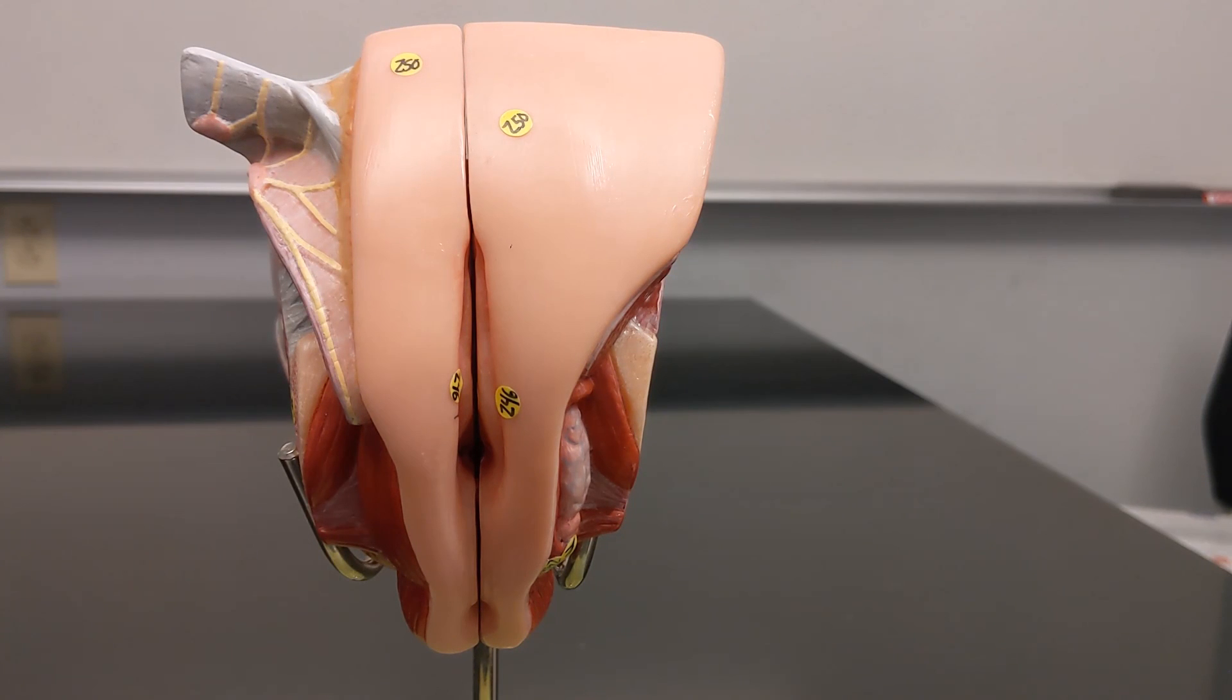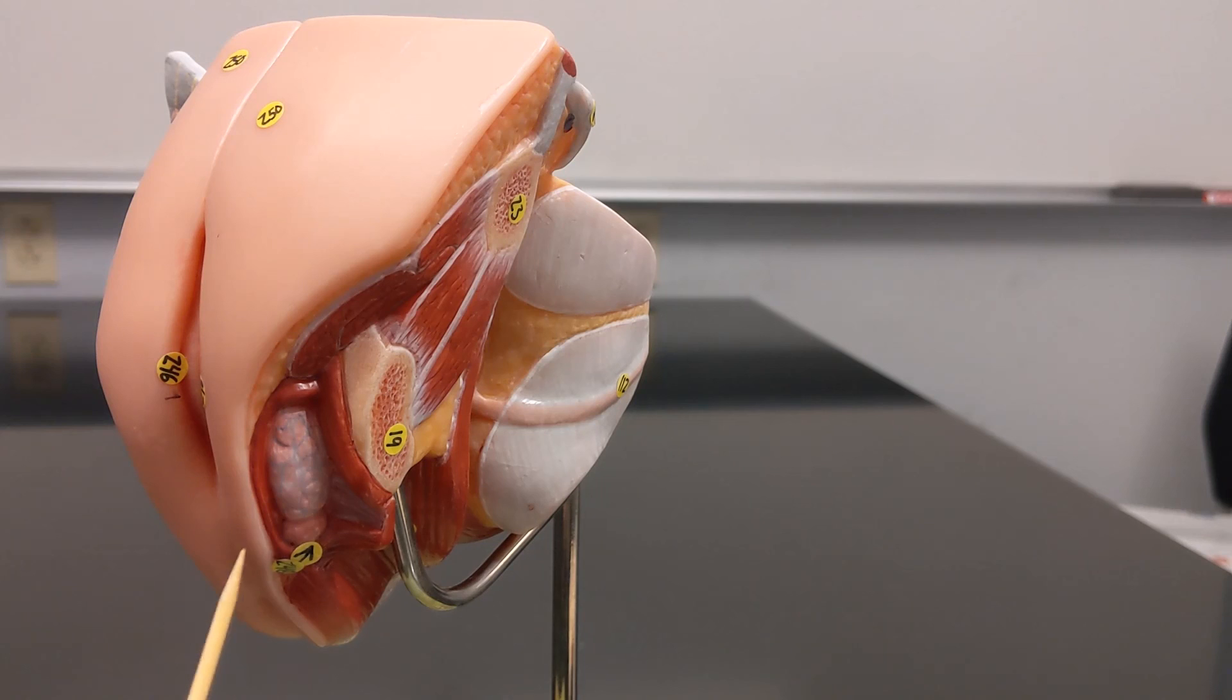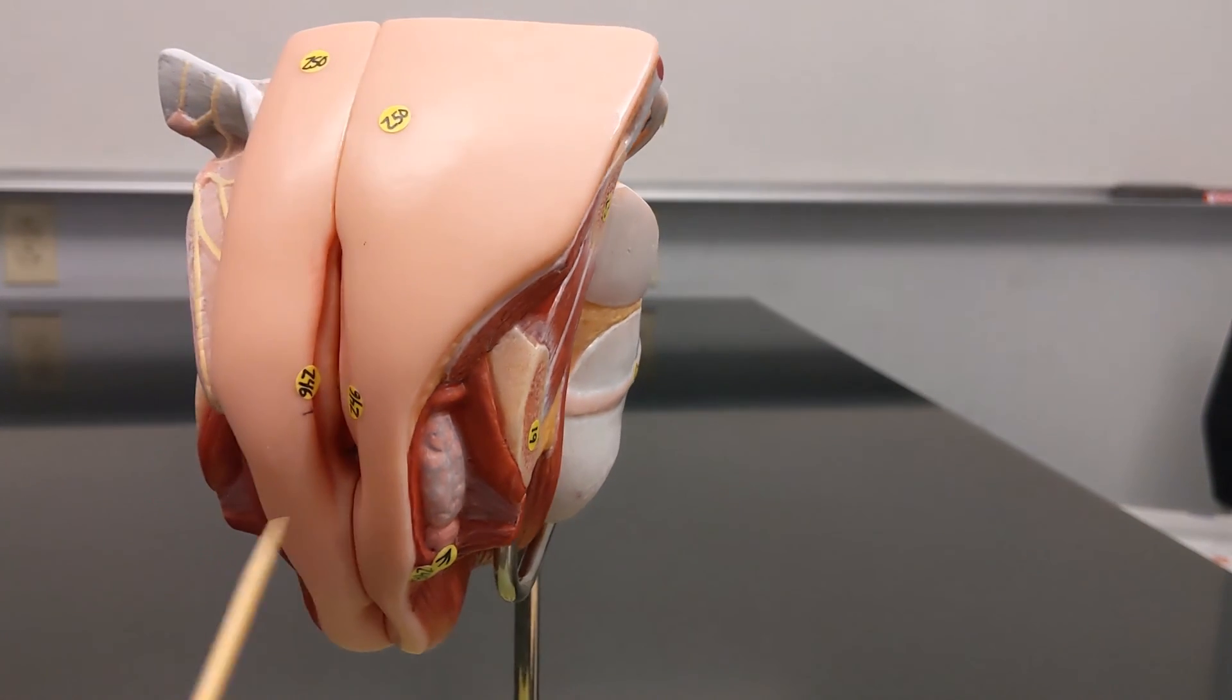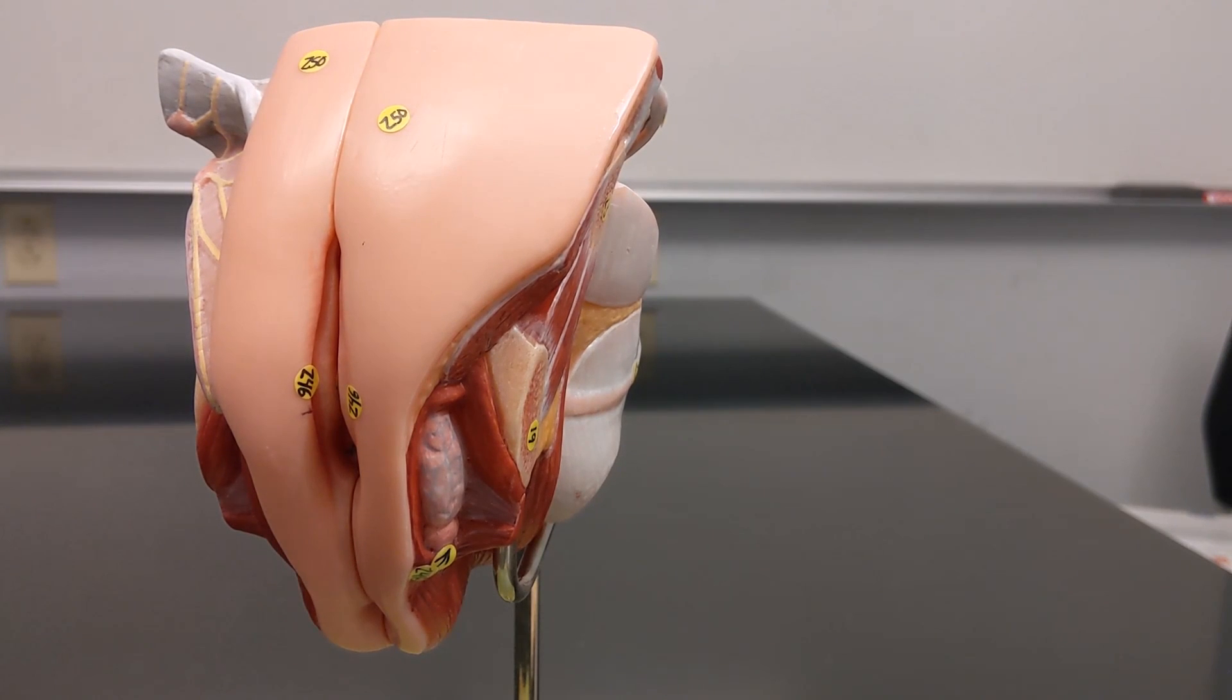So this semester I actually had a student ask me a very good question, which was, where's the third hole? So what you're actually seeing here, this is not the vagina yet. This is the vestibule, which is the entryway that contains both the opening of the urethra and the vagina. So the third hole is hiding in the vestibule. And also, that is why this is called the greater vestibular gland, because it provides a lubricating fluid for the vestibule.